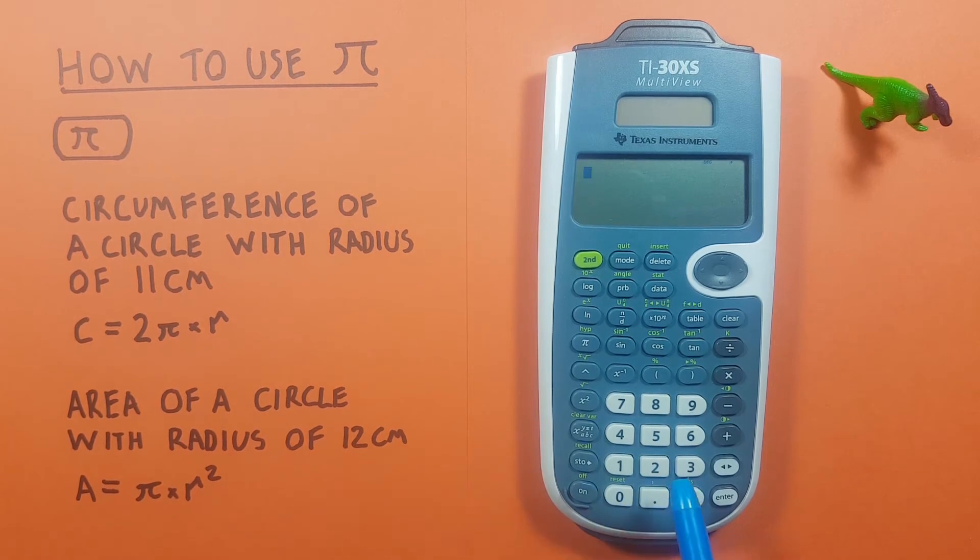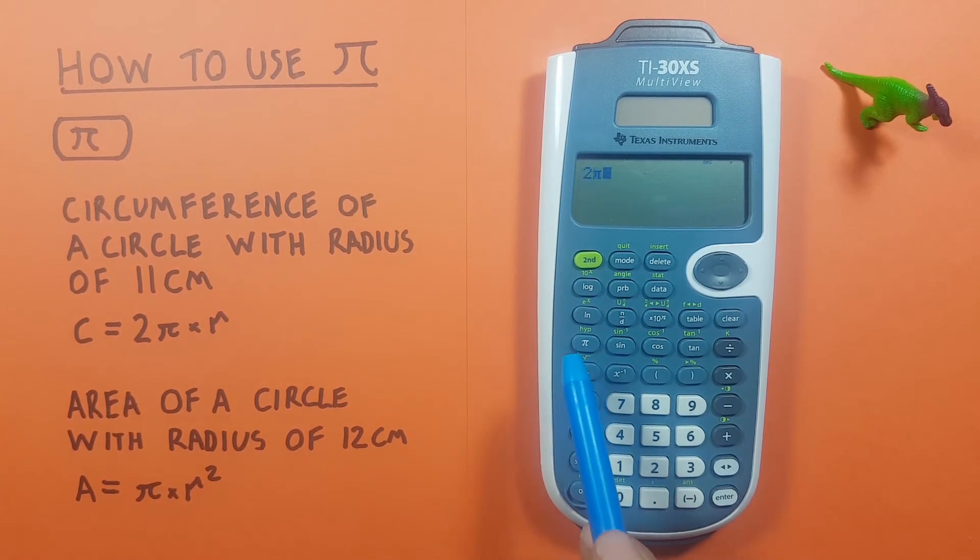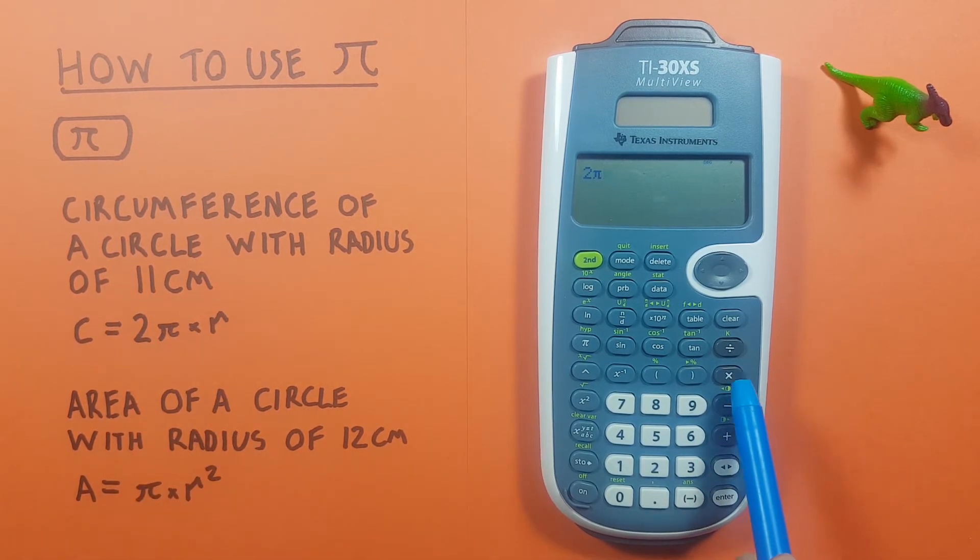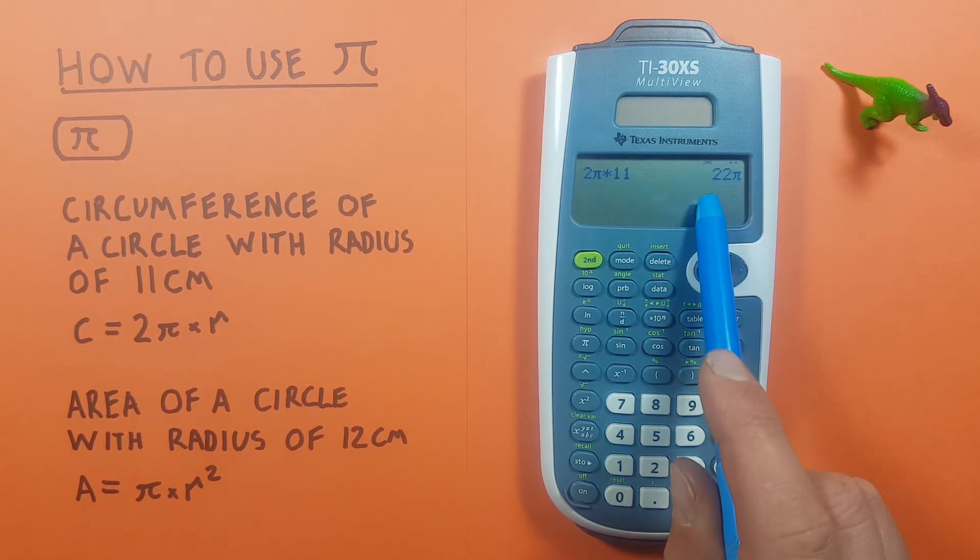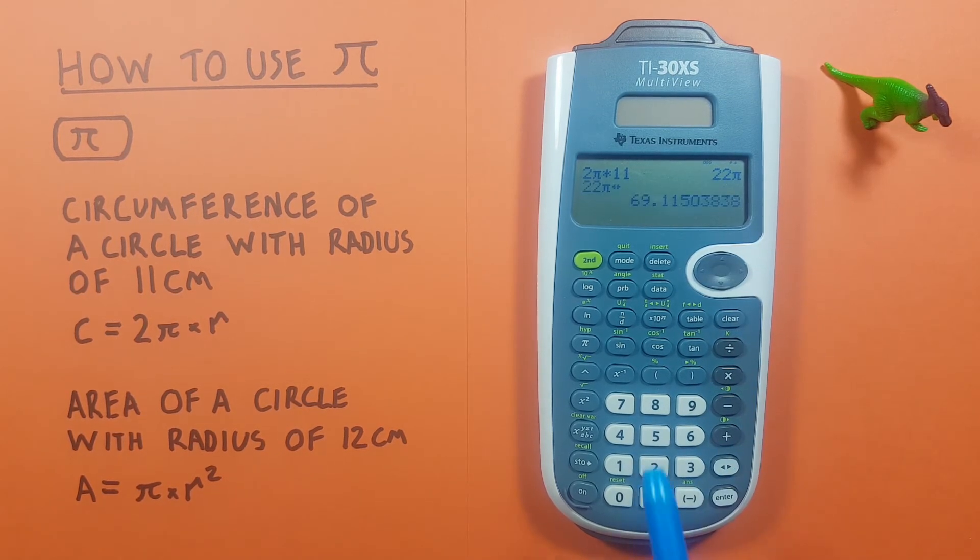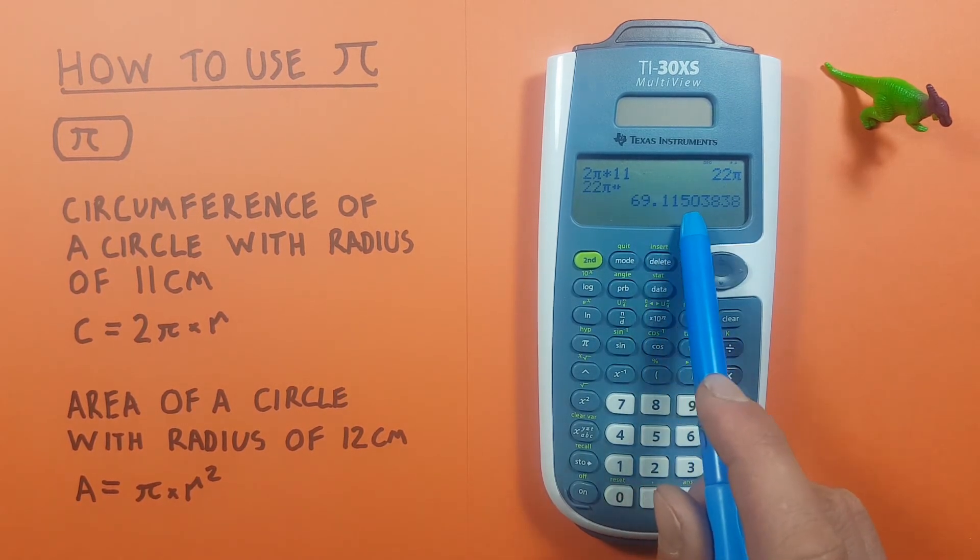So to do this we just enter 2π and then our R or radius, which is 11 centimeters, so we go times 11, press enter. We see that gives us 22π as a result, which we can convert to 69.115 etc.